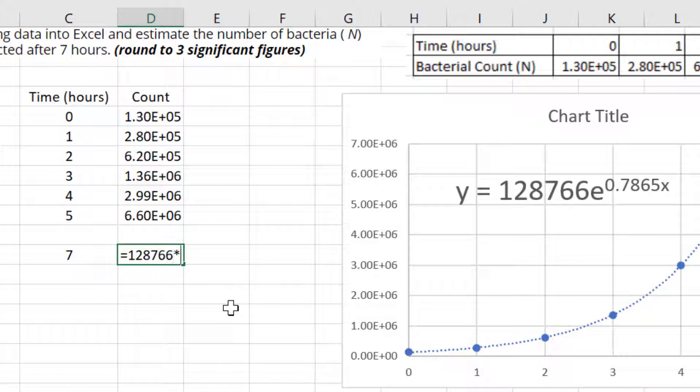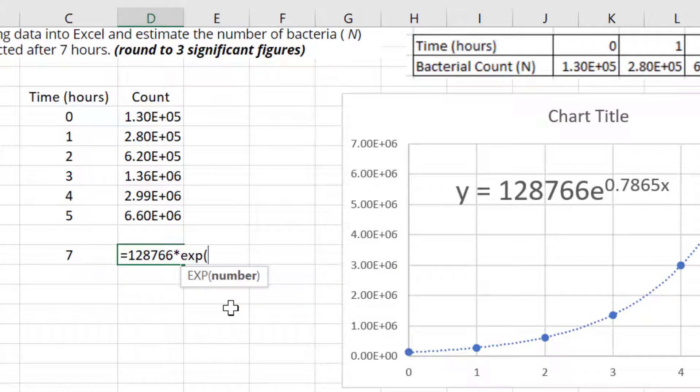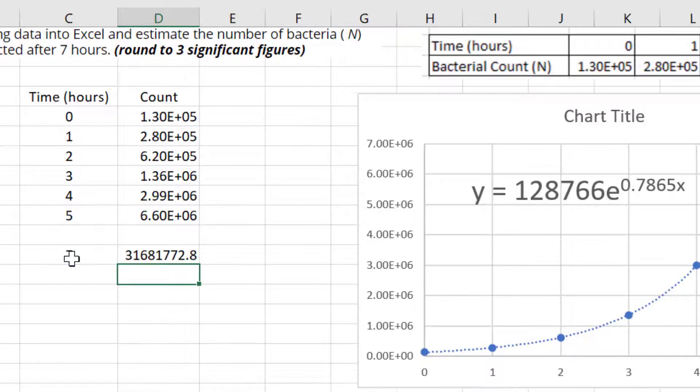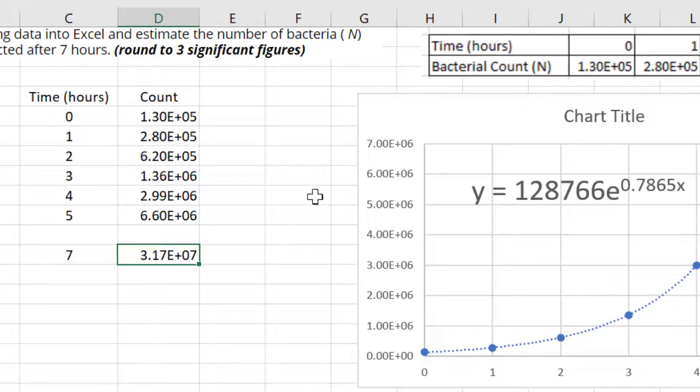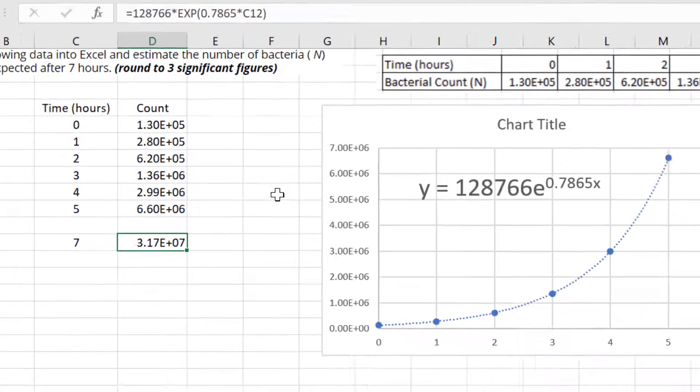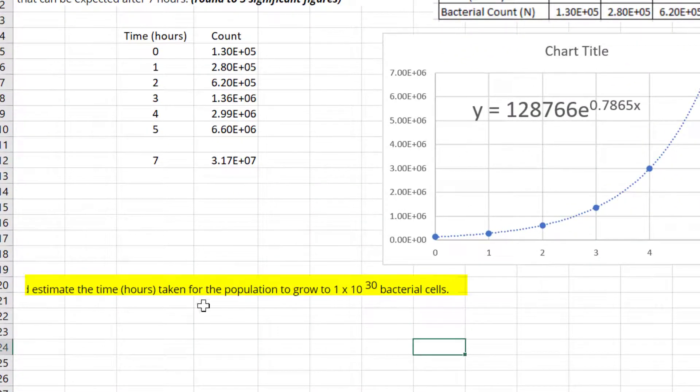It's simply the starting value times the EXP function, which is raised to, in this case, K equals 0.7865, and then times seven hours. This is best formatted to scientific notation. The answer is of the order of 3.2 times 10 to the 7 bacteria.